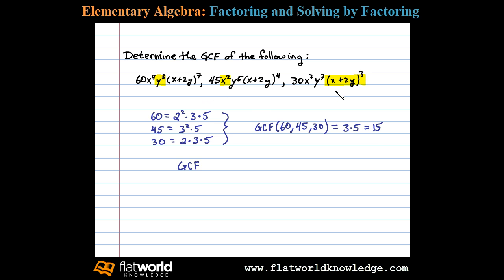The GCF of the three expressions will be the product of the GCF of the coefficients and the common variable factors. In this case, the GCF will equal 15 times x squared times y to the third times x plus 2y to the third.